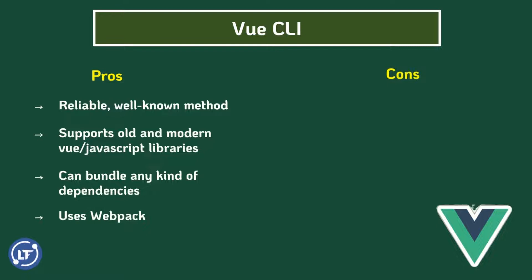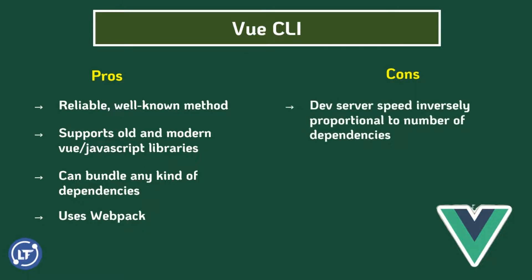Now let's look at the cons of the Vue CLI. Number one: the dev server speed is actually inversely proportional to the number of dependencies. As you keep building your Vue.js app and it gets larger, adding more JavaScript or Vue.js specific dependencies causes your server speeds to reduce. You begin to notice a lag — the time for rebuilding on your dev server becomes slower and slower.